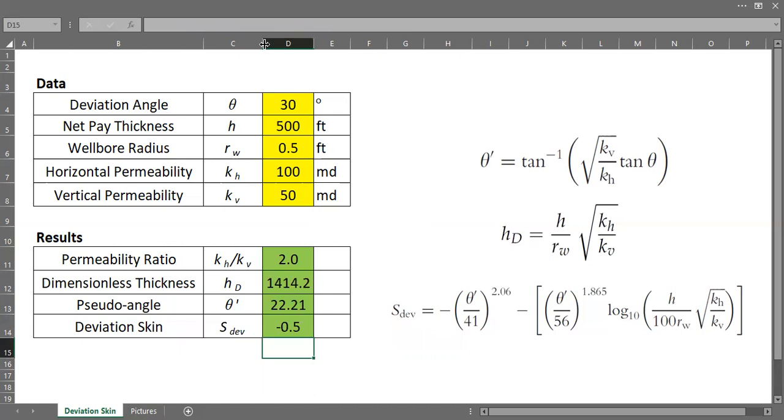So the deviation skin is minus 0.5. So with this case, with deviation angle of 30 degrees, with net pay thickness of 500 feet, wellbore radius, horizontal permeability, and vertical permeability of these numbers, I can sort of stimulate my well with deviation skin of minus 0.5. So what if we have higher angle?